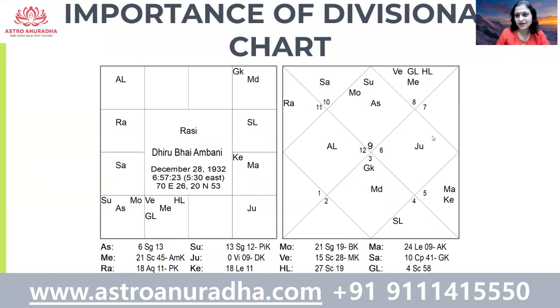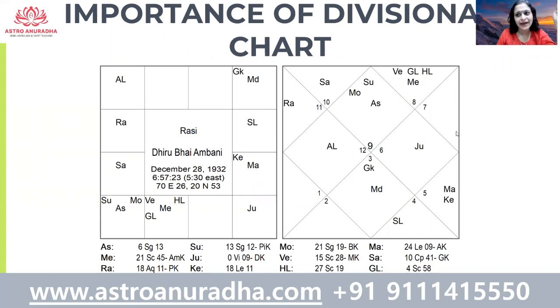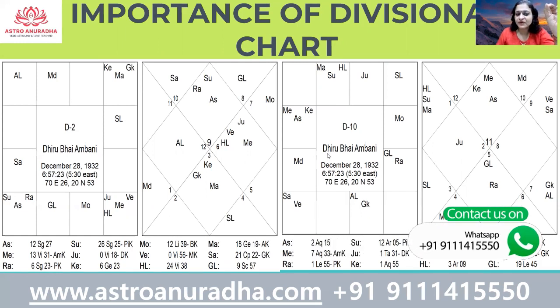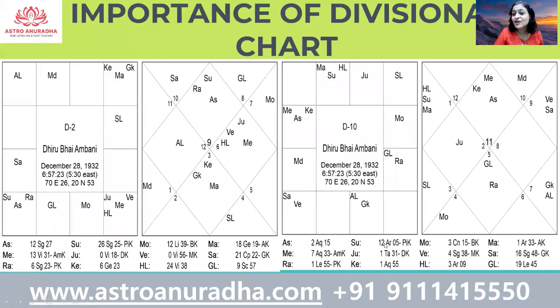Let's take the chart of Dhirubhai Ambani. Mercury here is the 7th and 10th lord in the 12th house. Generally, we would say he's likely to lose out on a lot of contracts. But the 12th house also talks about foreign shores — he started his work from foreign shores, so he used that energy well. In his D2 chart, Mercury is exalted and aspected by Mars, but is with two benefics — Jupiter and Venus. This Jupiter also aspects the second house and Saturn, making sure he works hard for his money and makes his money the right way — in dollops, so to speak.